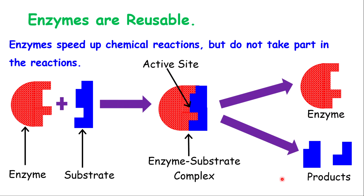Another property is that enzymes are reusable. Enzymes are used to speed up chemical reactions, but they themselves are not being used up in that chemical reaction. At the end of the reaction, enzymes are able to be reused or take part in other chemical reactions. This demonstration shows that an enzyme with a specific shape fits with a substrate with a specific shape — just like a lock and key situation. What you get as a result is what they call an enzyme-substrate complex.